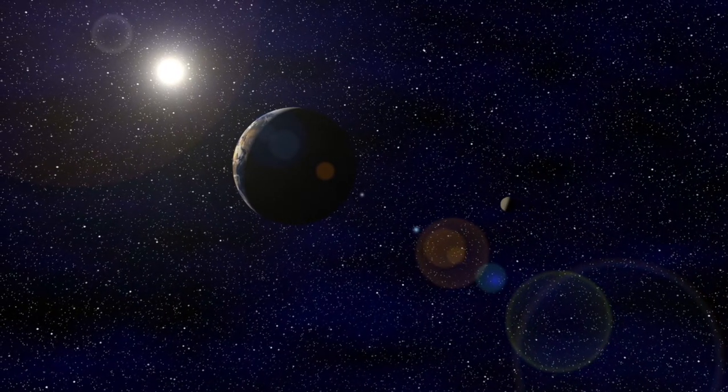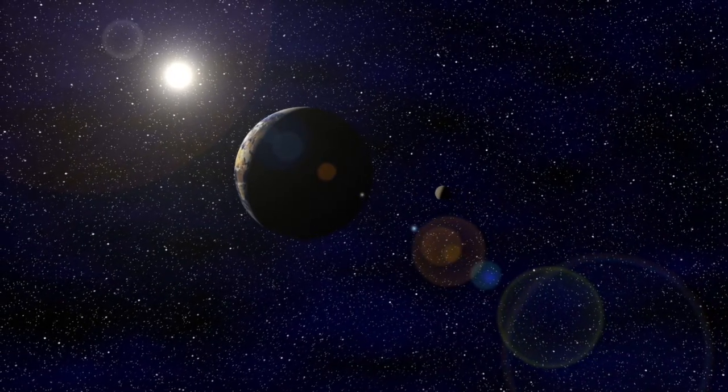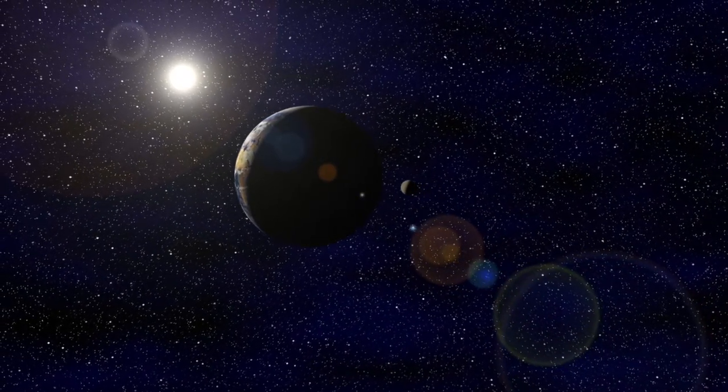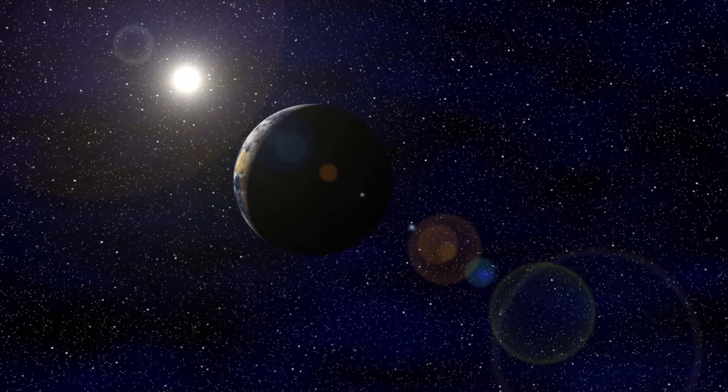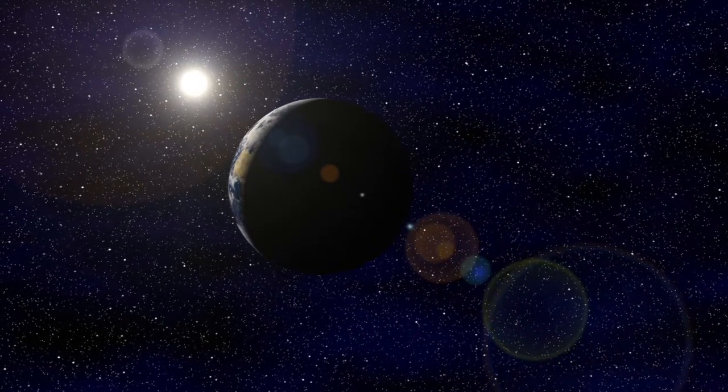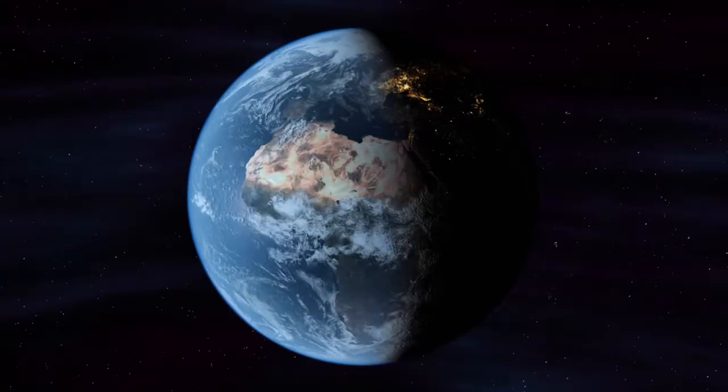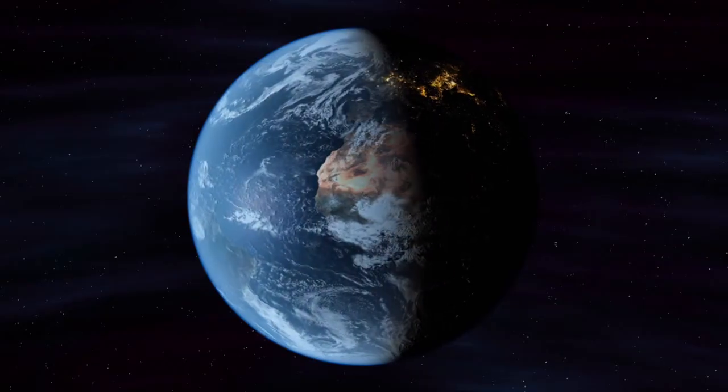The moon is spherical. However, when it's in different positions around the Earth, it looks like it's different shapes. The reason for this is because the moon orbits the Earth. The sun's rays illuminate the different parts of the moon.